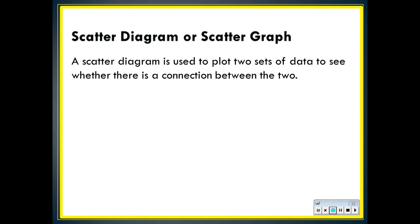A scatter diagram is used to plot two sets of data to see whether there is a connection or relationship between the two. Graphs should include a title, labelled axes and be drawn with a ruler and pencil.